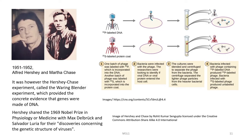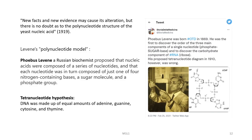These experiments firmly established that genes are made up of DNA. Much later, Levene came into the picture and put forward a famous model called the polynucleotide model, stating with confidence that new facts may cause its alteration, but there is no doubt as to the polynucleotide structure of yeast nucleic acid. Levene was a Russian biochemist who proposed that nucleic acids were composed of a series of nucleotides, each composed of just one of four nitrogen-containing bases, a sugar molecule, and a phosphate group.